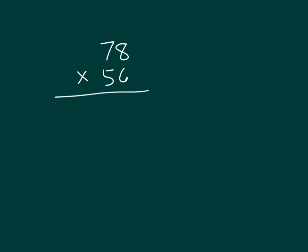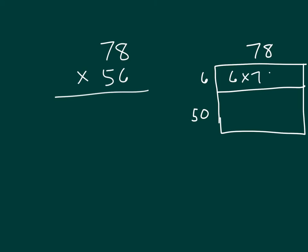One more look with the standard algorithm alongside the area model. We have 78 and we're multiplying it by 56. So we break it apart into 6 as well as 50. Where we work to figure out that first product of 6 times 78. That's why it goes on that first line. And then we work through that second product of 50 times 78 going on that next line.